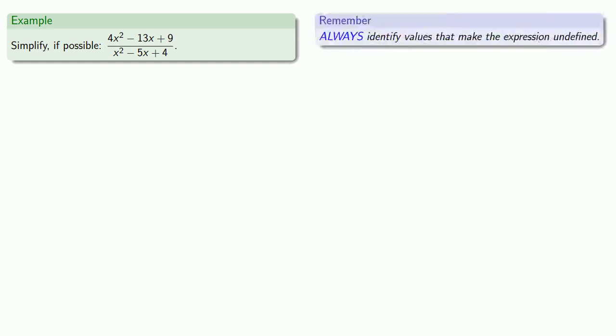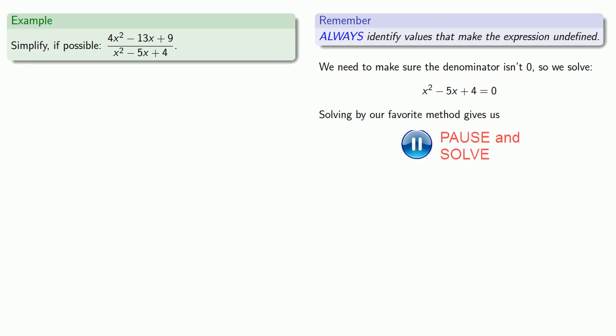So remember, always identify values that make the expression undefined. We need to make sure the denominator isn't zero. So we solve denominator equal to zero. Use your favorite method to find the solution. And we get x equals 4, x equals 1. And we might observe x squared minus 5x plus 4 is 0 when x equals 4 or x equals 1. So we require x not equal to 4 and x not equal to 1.